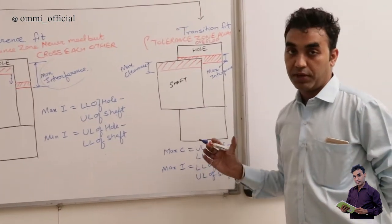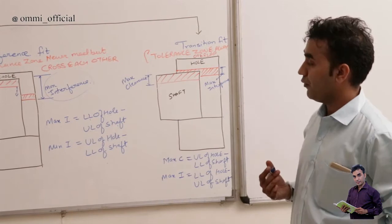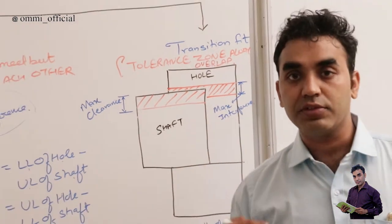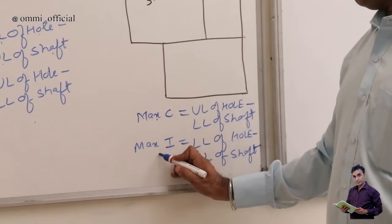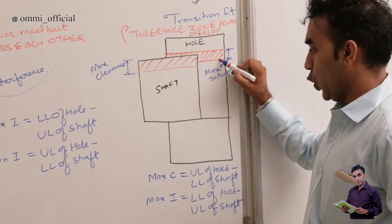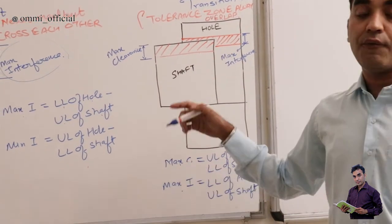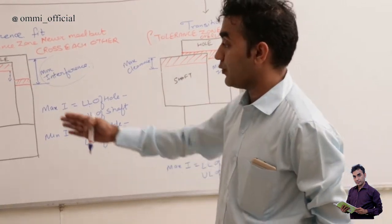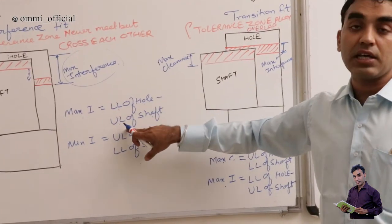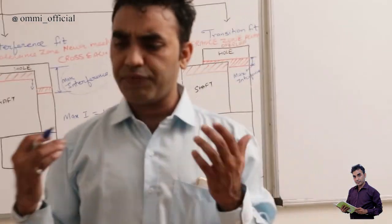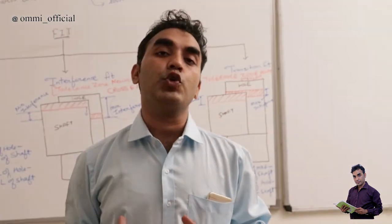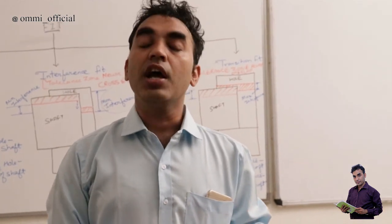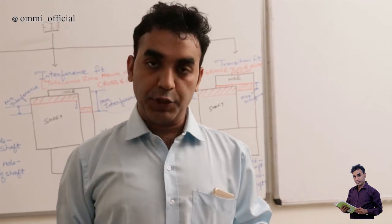Now we go for transition fit. This fit sometimes behaves like a loose fit and sometimes like a tight fit. In this case, the tolerance zones partially overlap. We have two conditions: maximum clearance and maximum interference. Maximum clearance is the upper limit of the hole minus the lower limit of the shaft, and maximum interference is the lower limit of the hole minus the upper limit of the shaft. By means of this, we are able to manufacture any specimen as per our requirement to meet the specification and standardization. Thank you very much for watching.